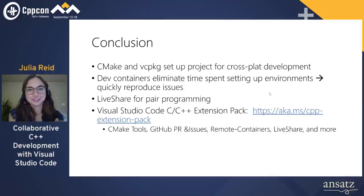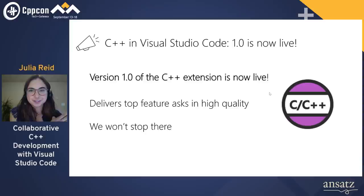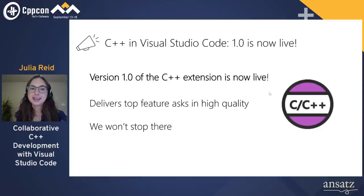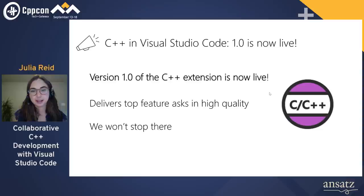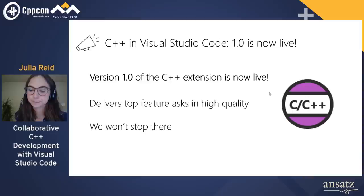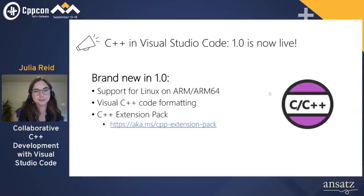Now for some exciting announcements. C++ in Visual Studio Code has reached version 1.0 today — it was released during this talk. The extension has been in preview for four years, during which customers helped shape the direction by reporting bugs and feature requests. Version 1.0 delivers the top feature asks in high quality. If you haven't tried the C++ extension in a while, now's the time to give it another shot. We're also excited about what the future holds.